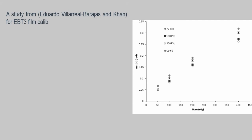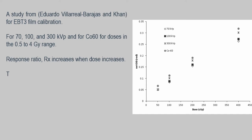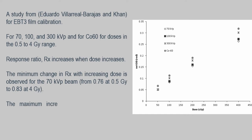Another study was done for the calibration of EBT3 film. The study was done for photons with energies of 70, 100 and 300 kVp and for Cobalt-60 in the dose range of 0.5 to 4 gray. From the graph, it can be seen that the response ratio RS increases when dose increases.